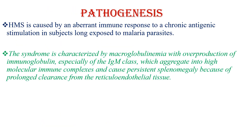The pathogenesis involves an aberrant immune response to chronic antigenic stimulation in subjects long exposed to malaria parasites. The syndrome is characterized by macroglobulinemia with overproduction of immunoglobulin, especially of the IgM class. This IgM aggregates into high molecular weight immune complexes and causes persistent splenomegaly due to prolonged clearance from the reticuloendothelial tissue.